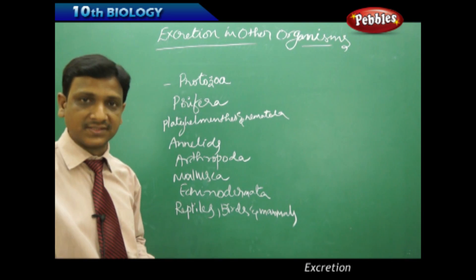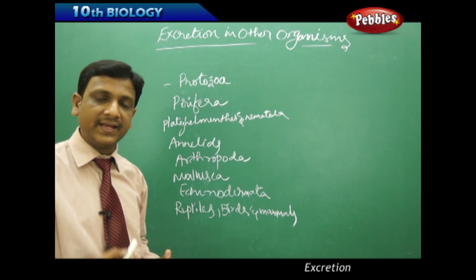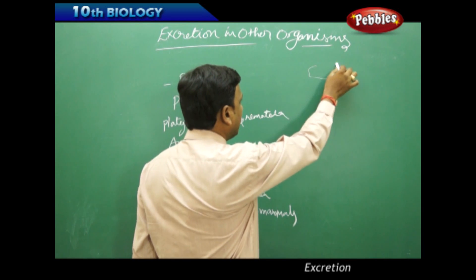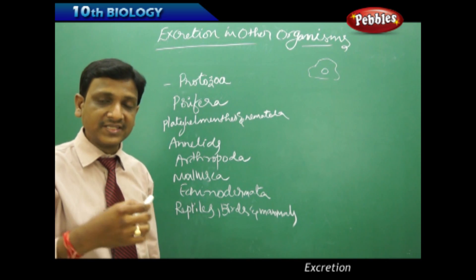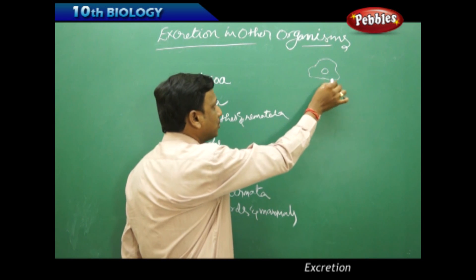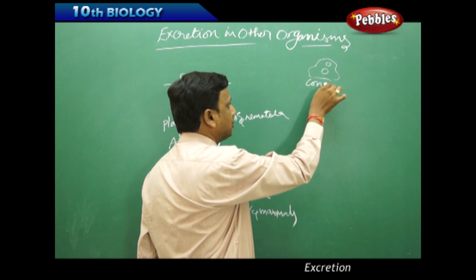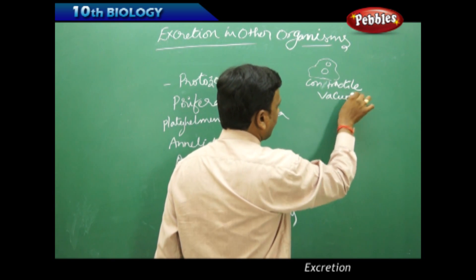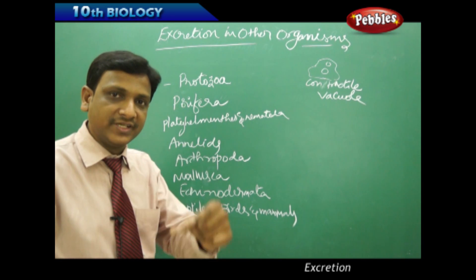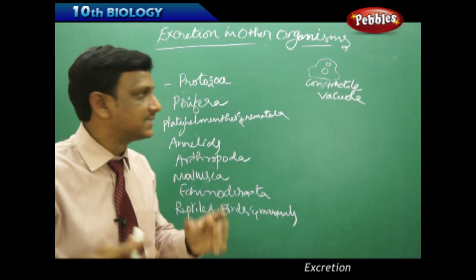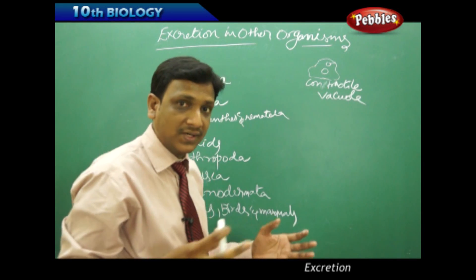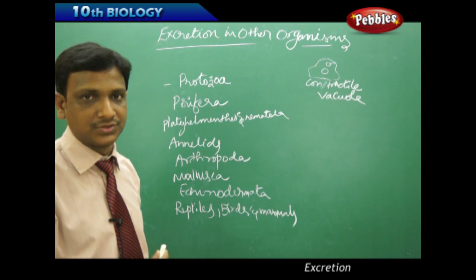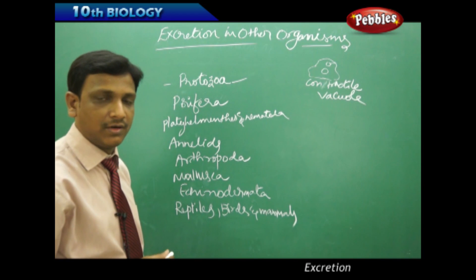In protozoa, such as the unicellular organism amoeba, excretory materials are produced within the single cell. The wastes are collected into a small bubble-like structure called the contractile vacuole. The contractile vacuole collects waste, swells up, grows in size, reaches the cell surface, then bursts open and releases the waste outside. This is how contractile vacuoles help in excretion in protozoa.